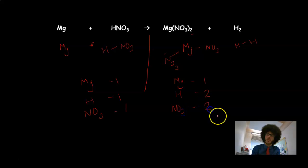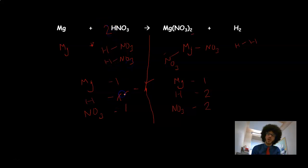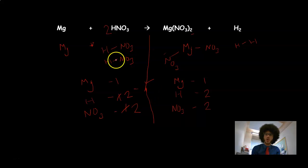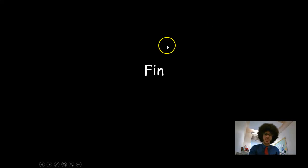Magnesium is already balanced. For hydrogen: 2 on the right and 1 on the left, so I add another HNO₃, giving 2 hydrogens and 2 nitrates on the left. Checking: Mg balanced, H = 2 and 2, NO₃ = 2 and 2 — all balanced. With polyatomics, treating them as one unit makes balancing so much easier. Best of luck with your balancing of equations!